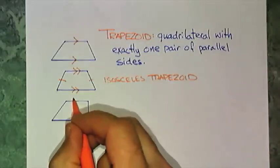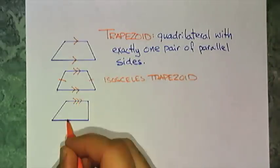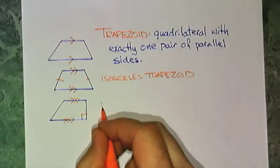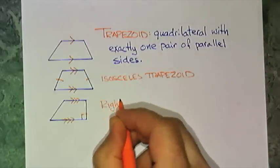This one, I'll make these sides parallel, and those two sides are not congruent, but I will include a right angle. This one is called a right trapezoid.